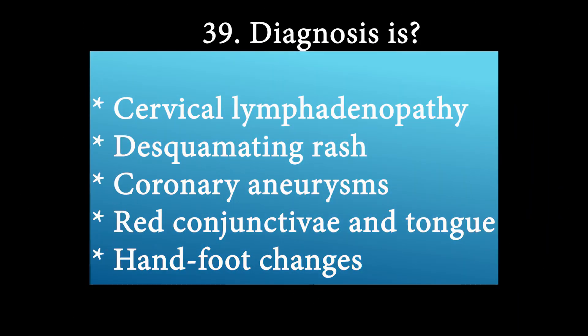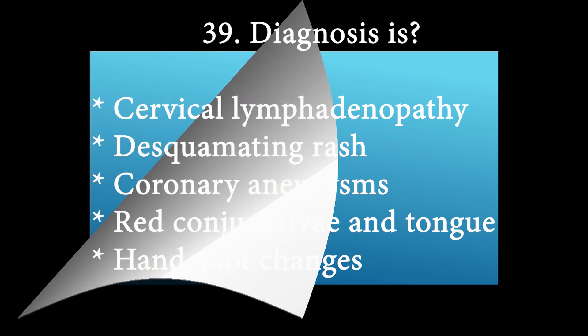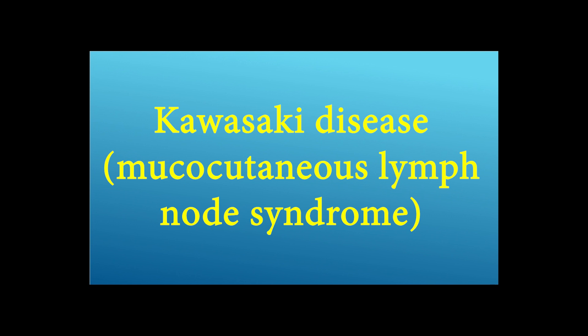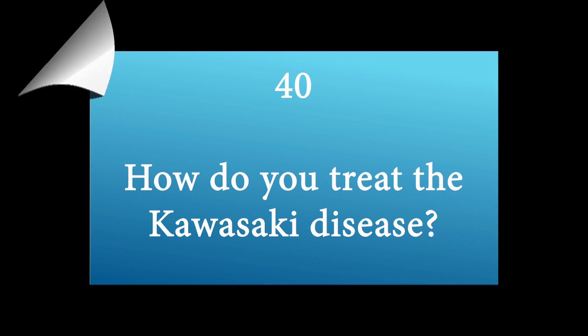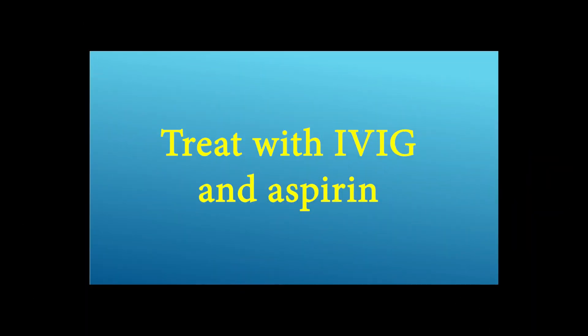What is the diagnosis of these signs and symptoms? Cervical lymphadenopathy, desquamating rash, coronary aneurysms, red conjunctiva and tongue, and hand-foot changes. The answer is Kawasaki disease — mucocutaneous lymph node syndrome. Treatment: IVIG and aspirin.